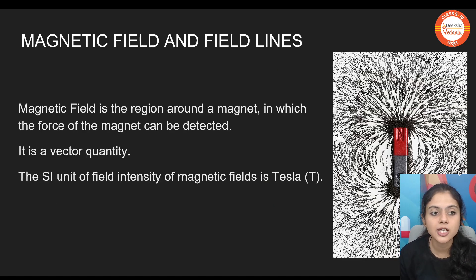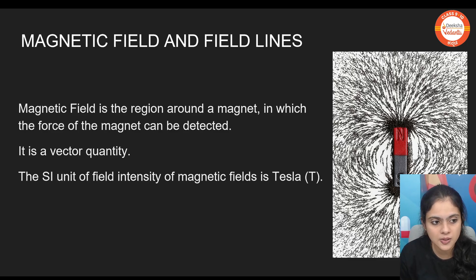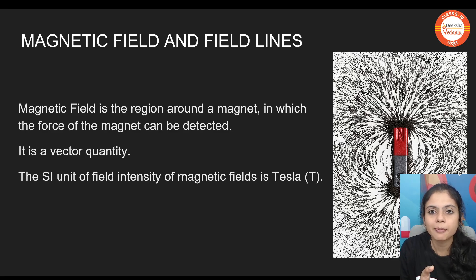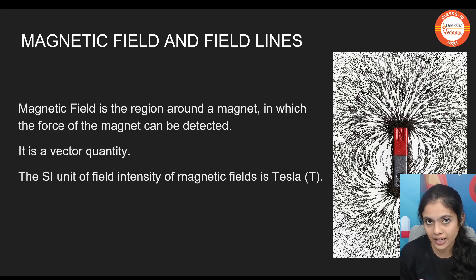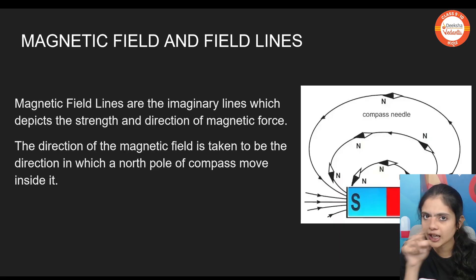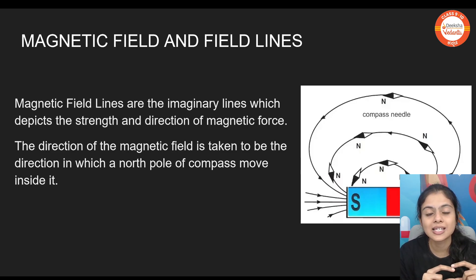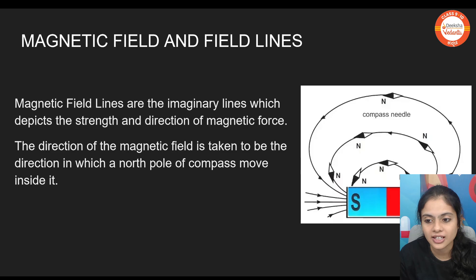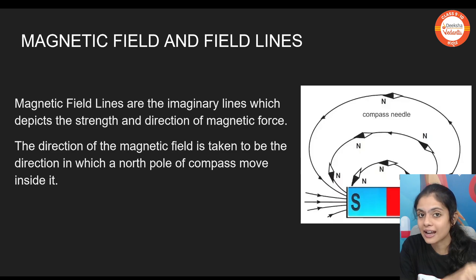This is the main concept in your textbook — all questions may arise from here. What is magnetic field? Magnetic field is a region around the magnet in which the force of the magnet can be detected. That region is called the magnetic field, and it is a vector quantity. The SI unit of magnetic field intensity is Tesla. Magnetic field lines are the imaginary lines which depict the strength and direction of the magnetic field. If the lines are more crowded over a particular region, the magnetic field strength is more. Direction is given by the alignment of the north pole, as shown in the diagram.